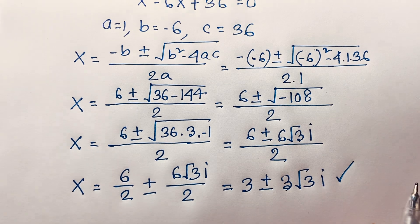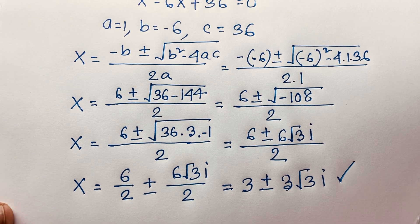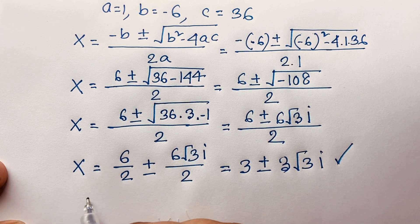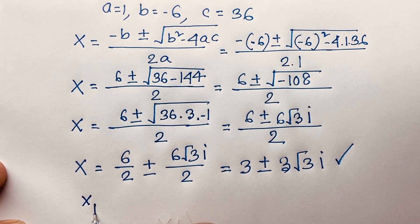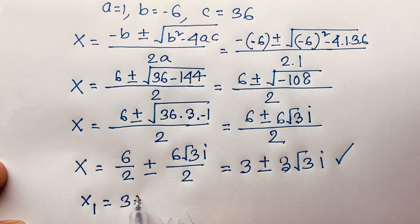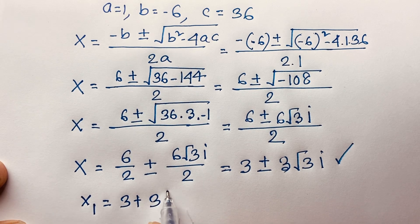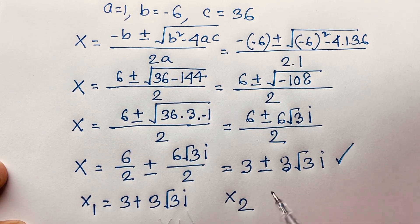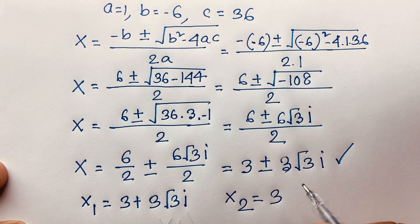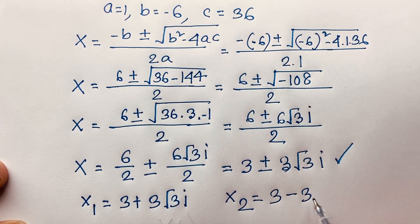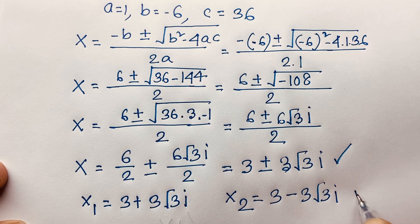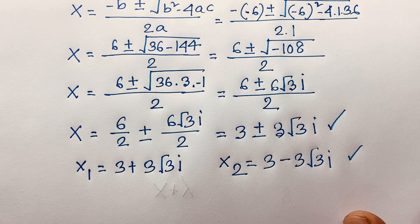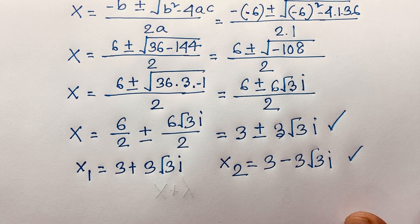These are complex numbers — there is no real solution. Both solutions are complex. So x₁ equals 3 plus 3 square root 3 i, and x₂ equals 3 minus 3 square root 3 i. These are the values of x in this math question.